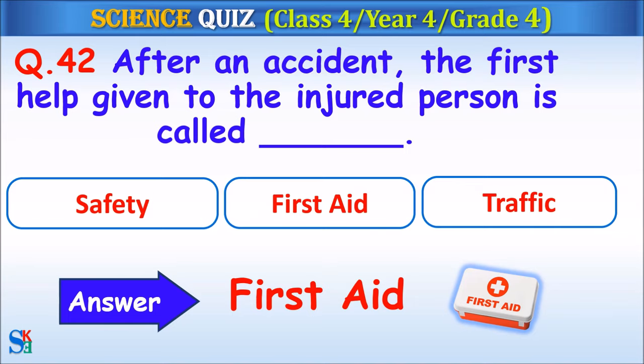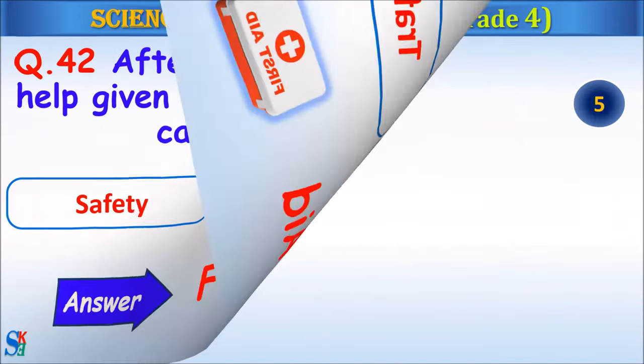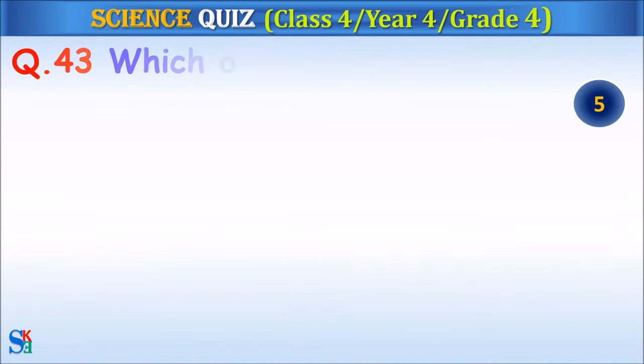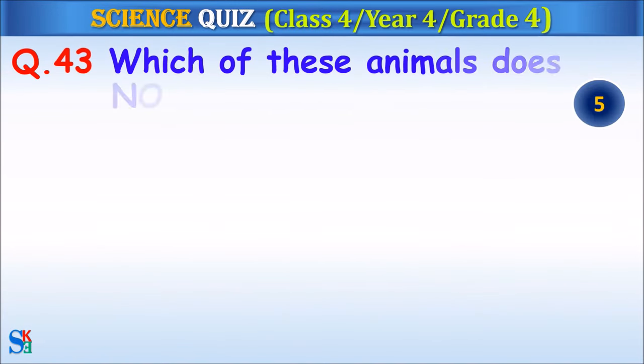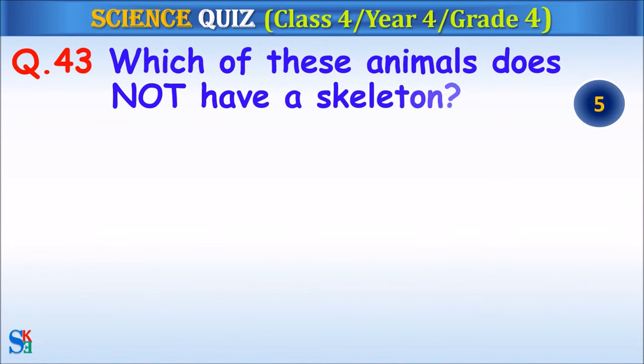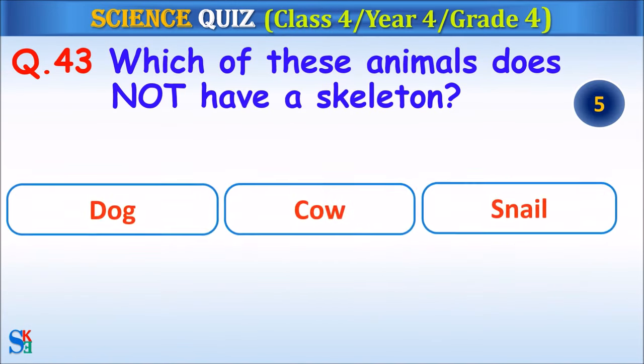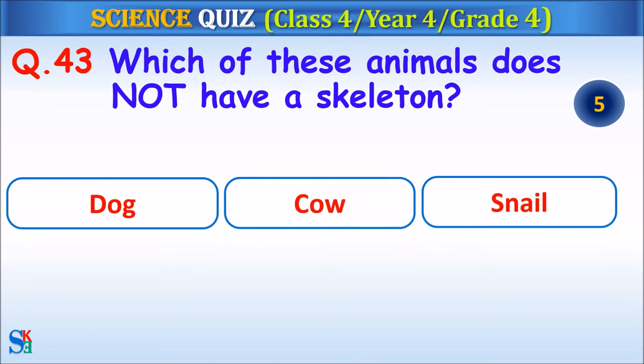Question 43: Which of these animals does not have a skeleton — dog, cow or snail? Your time starts.